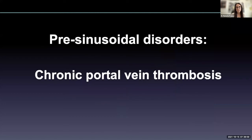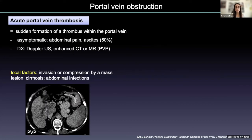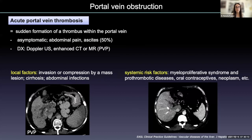Vascular liver diseases may occur at each step of the liver vascularization. In this session, I will focus on chronic portal vein thrombosis and Budd-Chiari syndrome. Acute portal vein thrombosis may occur in patients with abdominal infection, cirrhosis, or invasion by a liver lesion, or in patients with prothrombotic factors such as myeloproliferative syndrome and prothrombotic diseases.